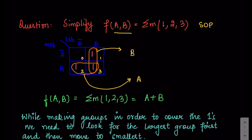Because there are two variables we make four boxes. On this side of the k-map we write the MSB, that is the most significant bit — A is the MSB and B is the LSB. We write 0 and then 1 for A, giving A-bar and A. Similarly for B we write 0 and then 1, giving B-bar and B. The boxes correspond to combinations 00, 01, 10, 11, which are 0, 1, 2, 3 in decimal.